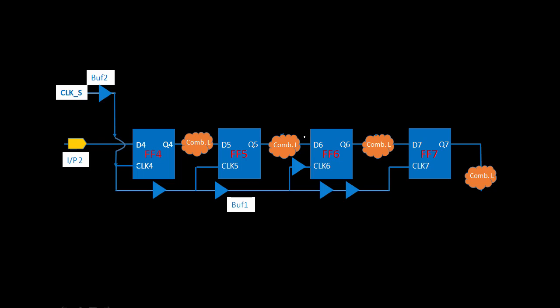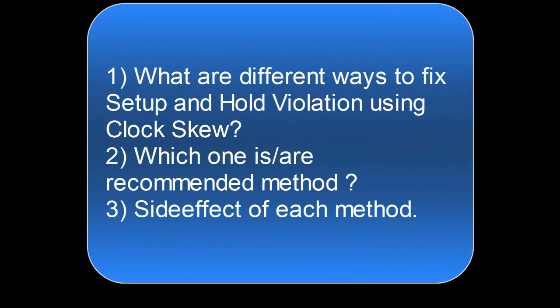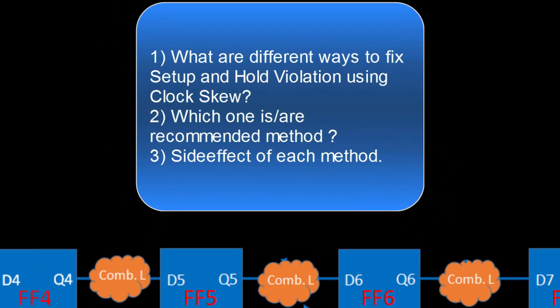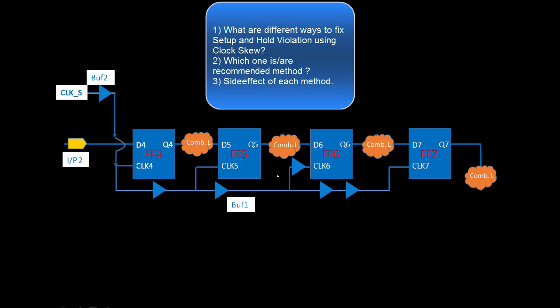So now in this lecture, we will talk about: suppose that in your circuit there is a setup and hold violation, and you want to fix that using skew. What are the different ways to do that? What are the recommendations? Whether there is any complexity with this method and how it is going to impact our final design. We will also discuss why, in general design practice, we do not recommend touching the clock tree during fixing of hold and setup violations.